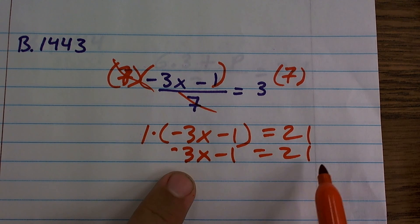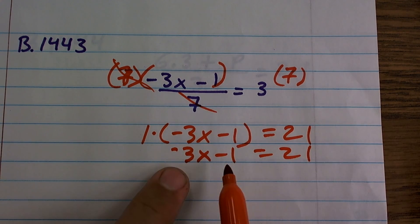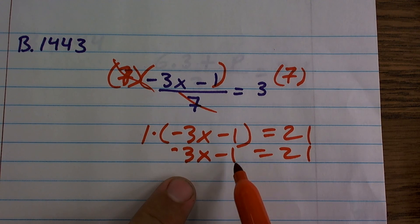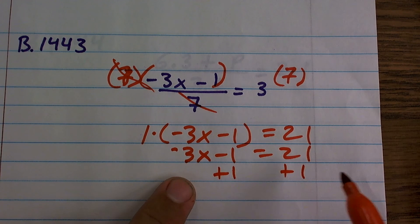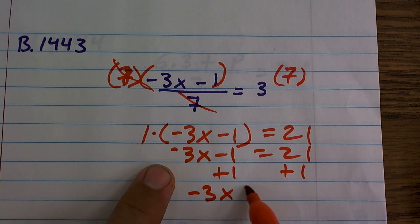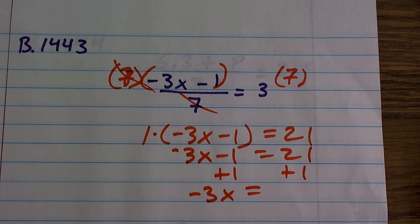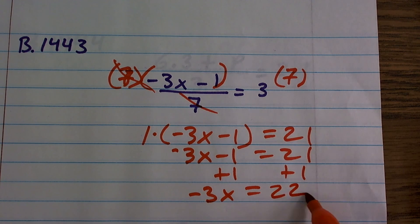Now I have a two-step equation. I just need to undo my operations. So remember, we always start with addition and subtraction, so I undo a subtraction of 1. So I'm going to add a 1 to both sides. And I have negative 3x equals 22.